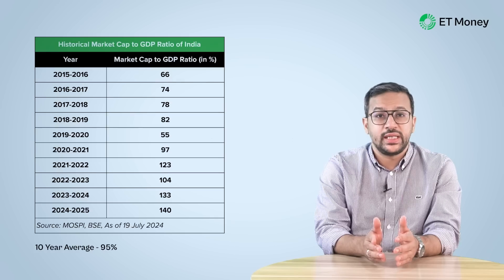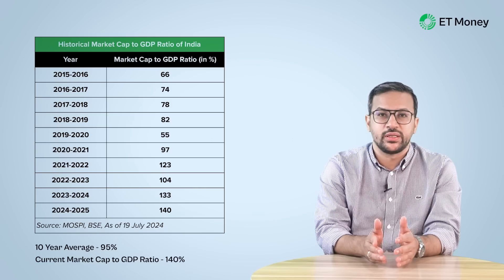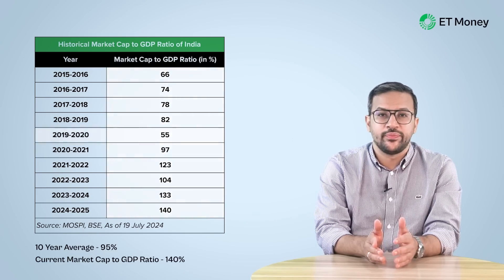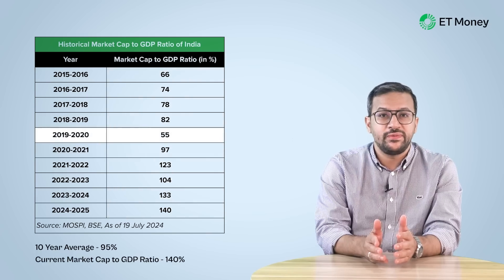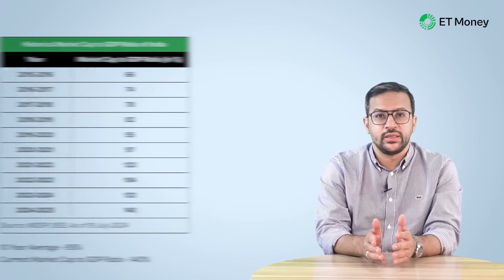To see if this ratio is high or low, we can compare it with the historical average. While the 10-year average is 95%, the current market cap to GDP ratio is 140%. If we look at the past decade, it has never been as high as it is today. The 10-year low was 55% in the year 2020. The current ratio is higher than its historical average and is on the higher side.